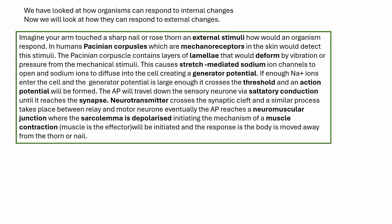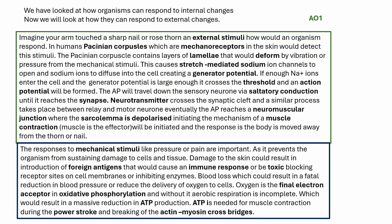For the AO2 importance: what would happen if you couldn't respond to danger and couldn't move your hand away? You could suffer blood loss. If you got a cut, less oxygen would be delivered to cells. Oxygen is the final electron acceptor in oxidative phosphorylation — without it, we can't complete aerobic respiration, can't make ATP, and therefore can't perform the power stroke or break actin-myosin cross bridges during muscle contraction. There are many ways to develop this point.